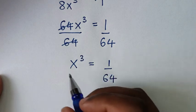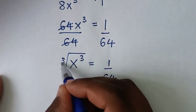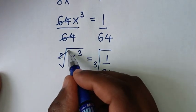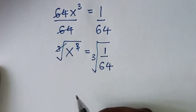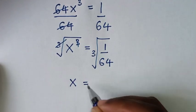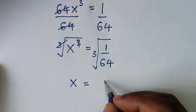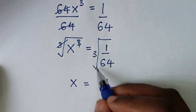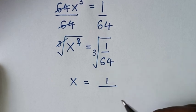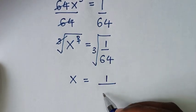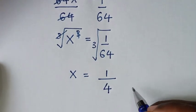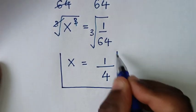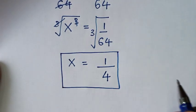Then because here we have power of 3, we'll apply cube root on both sides. This cube root will cancel this power of 3. Then it will be x = cube root of 1, which is 1, over cube root of 64. 64 is the same as 4 times 4 times 4, so cube root of 64 is 4. So this is the final answer for the value of x in our problem.